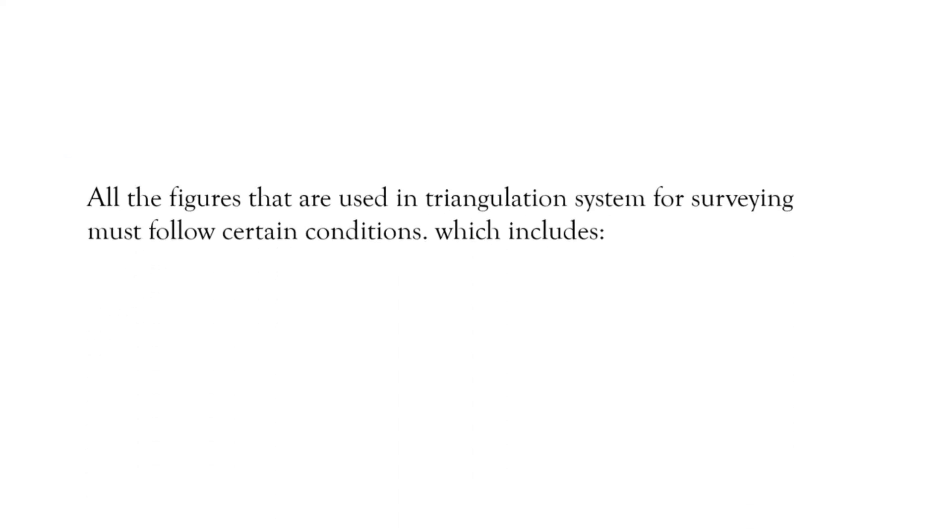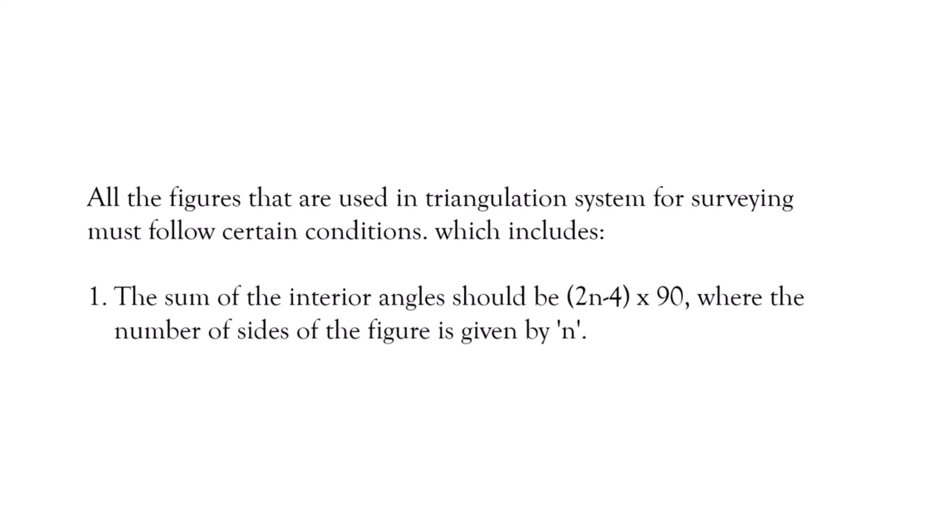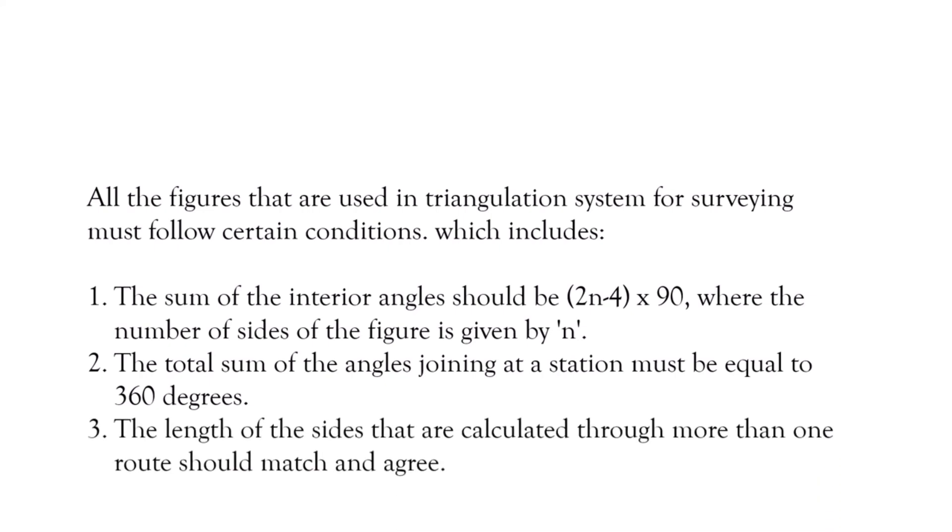All the figures that are used in the triangulation system for surveying must follow certain conditions, which include: the sum of the interior angles should be 2n-4 into 90, where the number of sides of the figure is given by n. The total sum of the angles joining at a station must be equal to 360 degrees. The length of the sides that are calculated through more than one route should match and agree.